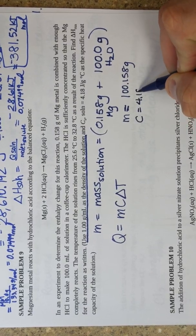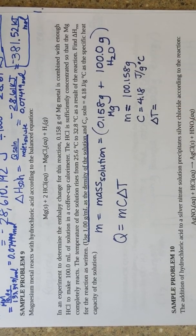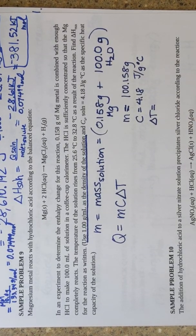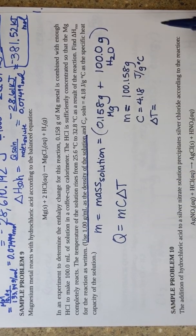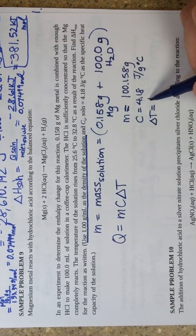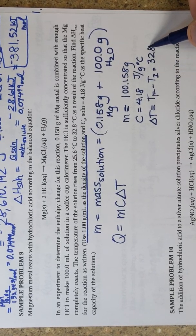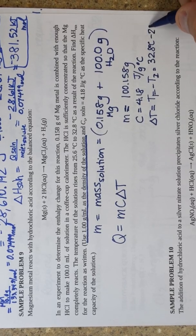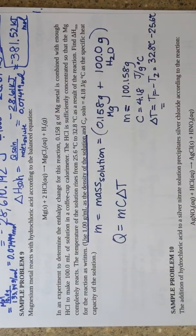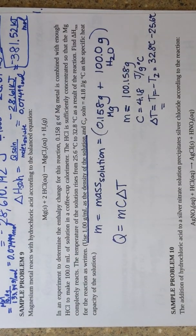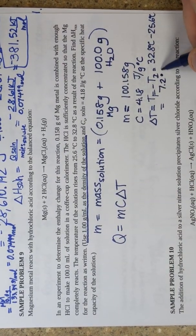The specific heat is 4.18 Joules per gram degree Celsius. There is a change in temperature, so we need to know by now that to calculate energy associated with temperature changes, I use Q equals MC delta T. Delta T is T final minus T initial, which is 32.8 degrees Celsius minus 25.6 degrees Celsius. My delta T then becomes 7.2 degrees Celsius.